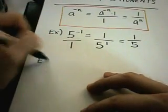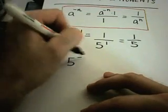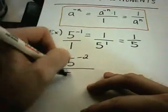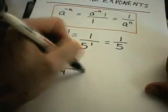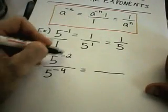Likewise, let's do another example. Suppose I have 5 to the negative second over 5 to the negative fourth, and I want to simplify this number down.